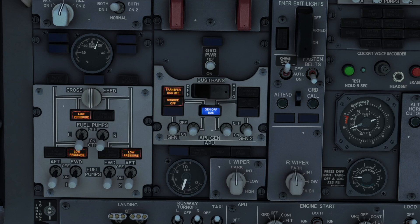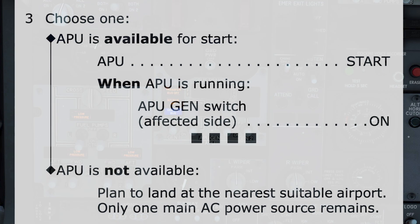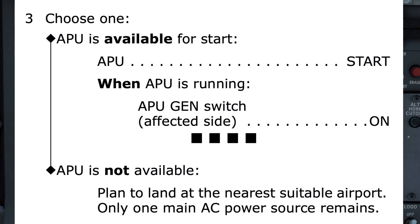The blue light indicates the APU is running, so we can now turn the APU generator switch to on. Returning to the checklist, we can see after the APU generator switch is switched on, the 4 black boxes underneath indicate the checklist for transfer bus off, with an APU generator selected on, has now been completed. The pilot monitoring informs the pilot flying: 'Transfer bus off checklist completed.'